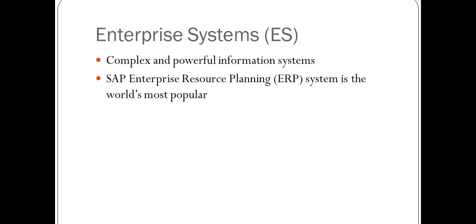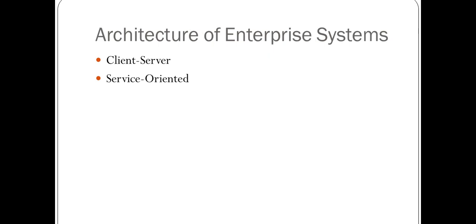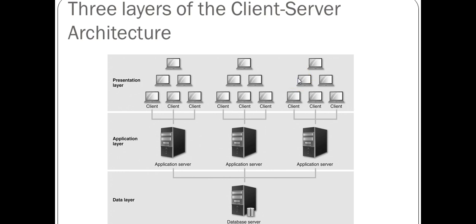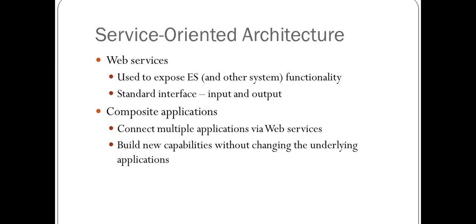There are two architectures for an enterprise system: the client-server and the service-oriented architecture. The client-server is a three-layer architecture where the presentation layer is the client, then you have the application layer in the middle tier, and the data layer as the main server at the top.